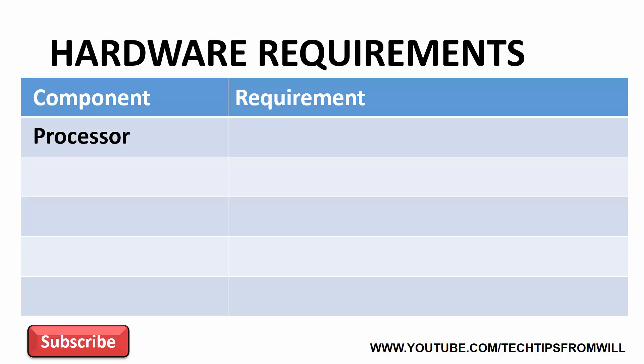The first requirement is the processor requirement. Windows Server 2016 requires a 1.4GHz 64-bit CPU or better. Understand that 1.4GHz should be considered an absolute minimum. Although a processor of this speed is enough to install Windows Server 2016, it will not give the best performance.